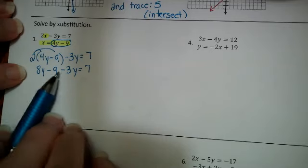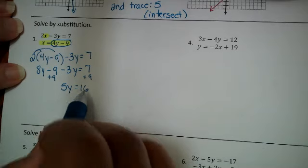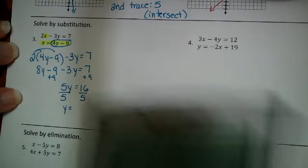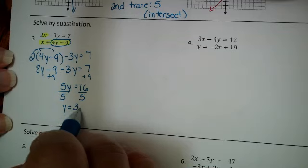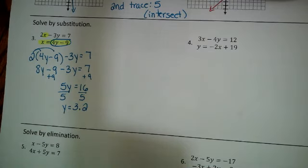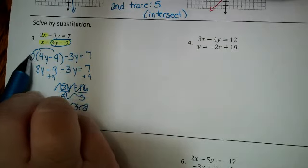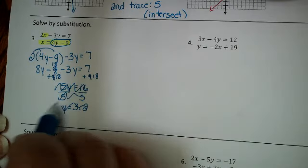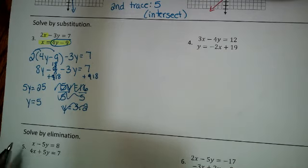When I simplify, 8y minus 3y is 5y. I noticed a mistake — 2 times 9 should give me 18, not 9 — so I add 18 to both sides and end up with 5y equals 25. Therefore y equals 5. Sorry about that mistake.